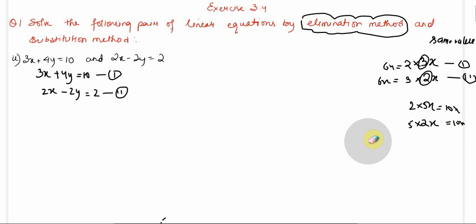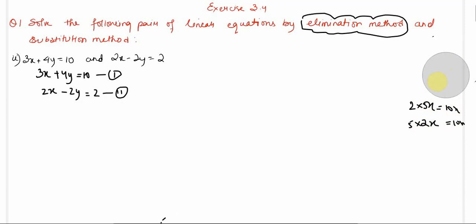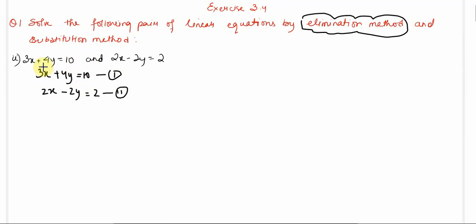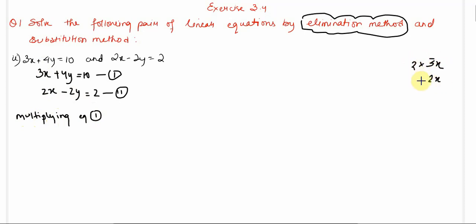In some conditions we multiply only one equation. If we were eliminating y, we'd multiply only the second equation by 2 to get 4y. But since we're eliminating x, we must multiply both equations. So: multiplying equation 1 by 2 and equation 2 by 3. Remember to multiply every term — both the left-hand side and right-hand side.